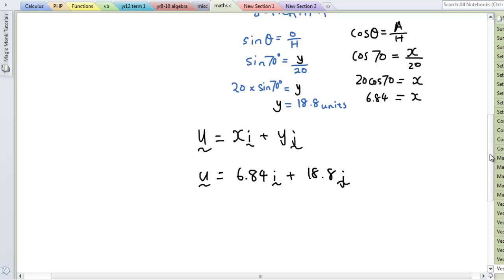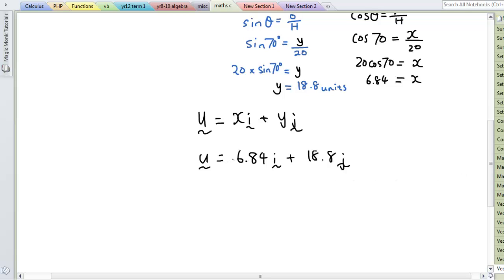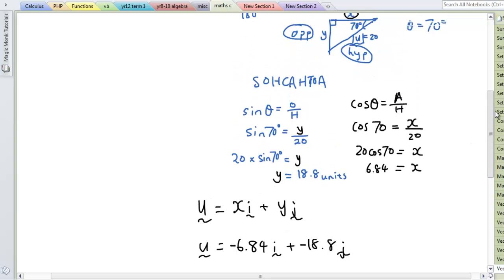Now does this work for this? No. Because the vector is going in this direction. So therefore we need to realize that x is negative and y is negative. So therefore we need to change this to negative 6.84i plus negative 18.8j. Make sure you get the negative numbers in.